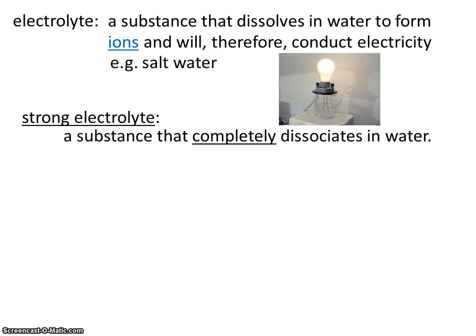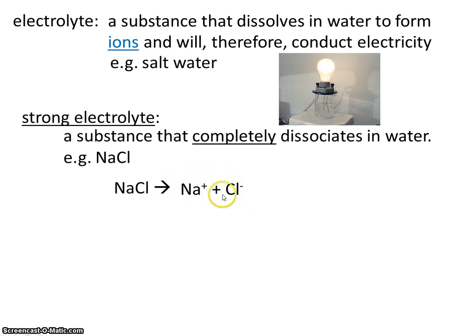A strong electrolyte is a substance that completely dissociates in water, or completely breaks up in water. An example of a strong electrolyte would be sodium chloride. Sodium chloride as a solid breaks up into sodium ions and chloride ions, and it's these ions that will conduct electricity.